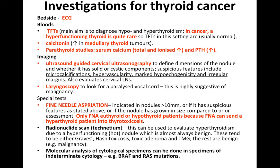With laryngoscopy, a paralysed vocal cord is highly suggestive of malignancy, indicating the thyroid cancer has invaded a recurrent laryngeal nerve. FNA is indicated for nodules greater than 10mm, those with suspicious ultrasound features, or nodules that have grown compared to prior assessment. FNA should only be performed in euthyroid or hypothyroid patients, as performing FNA in a hyperthyroid patient can lead to thyrotoxicosis, which is life-threatening.